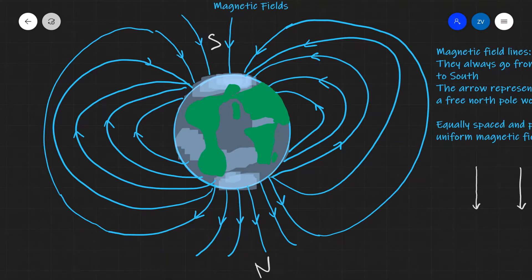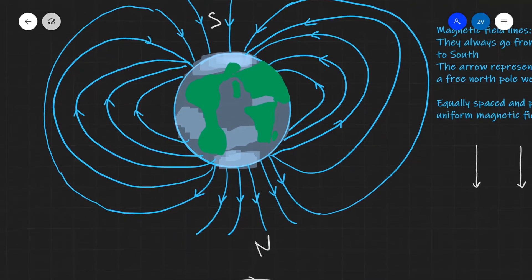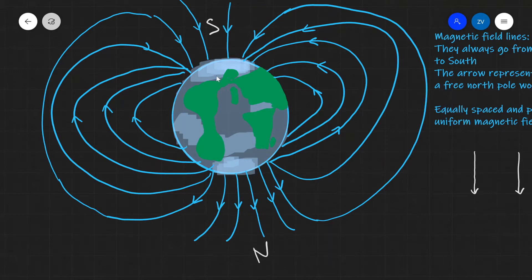First off, we're going to be looking at magnetic field lines, which help us visualize magnetic fields. As an example, we can see an illustration of Earth's magnetic field, which can be approximated by essentially having a giant bar magnet along the axis of the Earth.